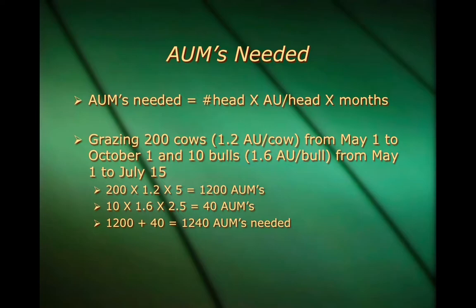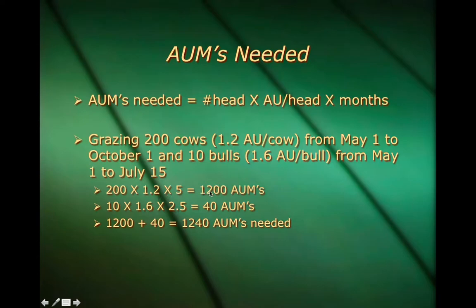The next area is AUMs needed. The formula is: number of head times the animal unit per head times the months. For example, we're grazing 200 cows at 1.2 AU per cow from May 1st to October 1st — that's 5 months. We also have 10 bulls at 1.6 AU per bull grazing from May 1st to July 15th — that's 2.5 months. So: 200 times 1.2 times 5 equals 1,200 AUMs for the cows, and 10 times 1.6 times 2.5 equals 40 AUMs for the bulls, totaling 1,240 AUMs needed.